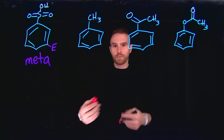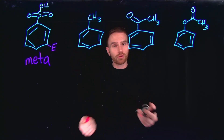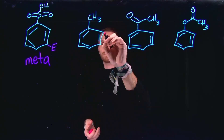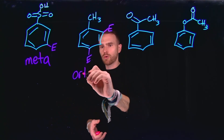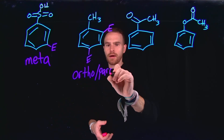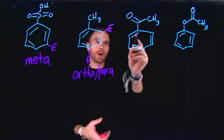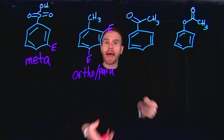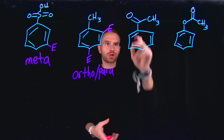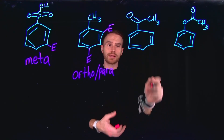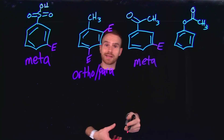A methyl group is electron-donating, so even though there are no pi electrons or lone pairs on carbon, it would be an ortho and para director — an activating group. An acetyl carbonyl group (carbon double-bonded to oxygen) is strongly electron-withdrawing, which does not allow pi electrons to be donated into the system, making it a meta-director.